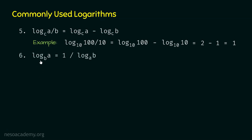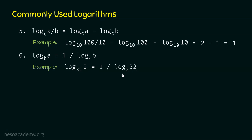The sixth logarithm is log A base B equals 1 divided by log B base A — the base becomes the argument and the argument becomes the base. For example, log 2 base 32 can be written as 1 divided by log 32 base 2. Since 2 power 5 is 32, log 32 base 2 is 5, so we get 1 divided by 5, which is 0.2.